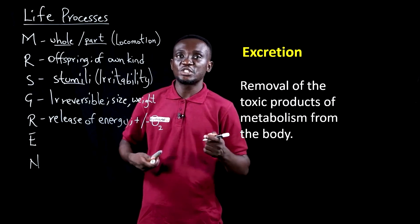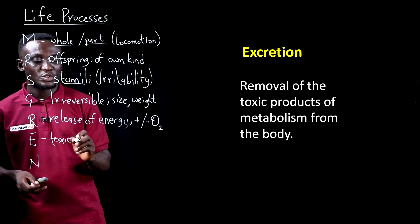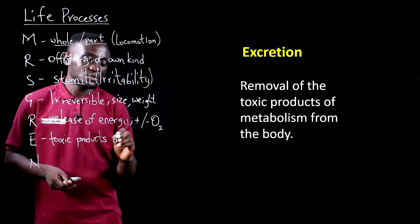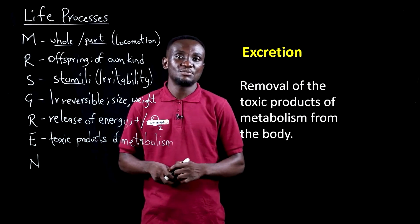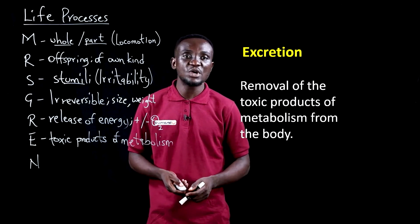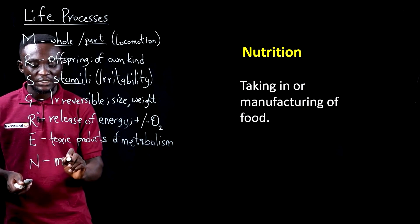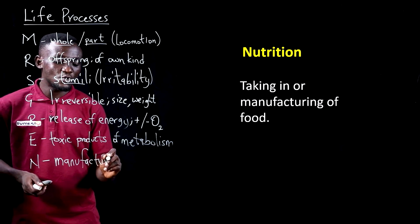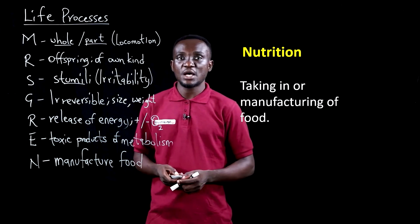Then we have excretion, which deals with the removal of the toxic products of metabolism — or waste metabolic substances from the body — and that is largely characterized by excretion, where waste metabolic products are released from the body. And finally, we have nutrition, which is the ability of an organism to manufacture and consume its own food — to manufacture and take in food. That is largely characterized by nutrition.